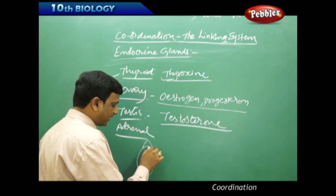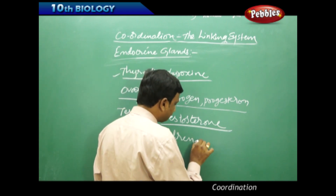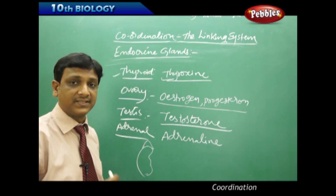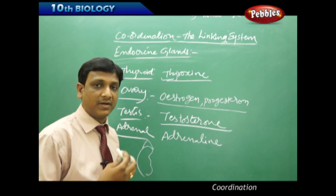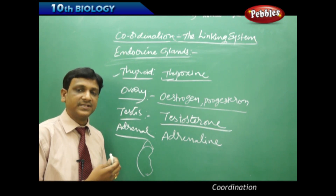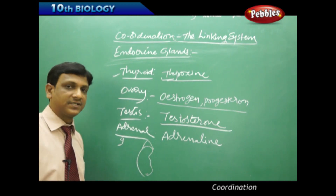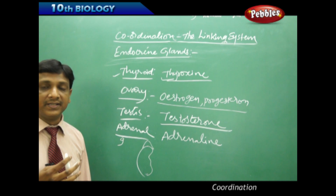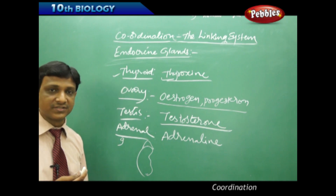The adrenal gland is found on top of the kidney, like a cap-like structure. It secretes the hormone adrenaline. Adrenaline is associated with the fight-or-flight mechanism. Its effects on the body include increased breathing rate, increased heartbeat rate, dilation of the coronary artery, and dilation of the pupil.